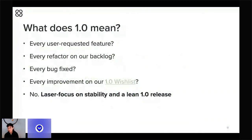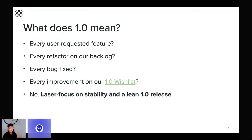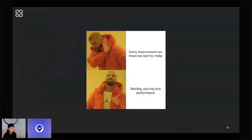Before I share any specific roadmap items, I want to talk about what it means to reach 1.0. Sometimes people expect 1.0 software to be finished and complete with every feature any user could ever want. You may be familiar with a GitHub milestone called "Tendermint 1.0 Wishlist" which has 351 items on it — but that is not our to-do list for Tendermint 1.0.